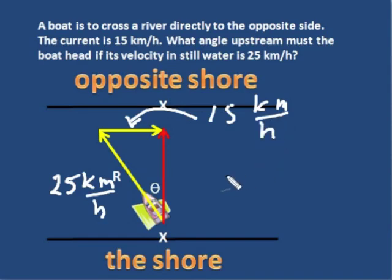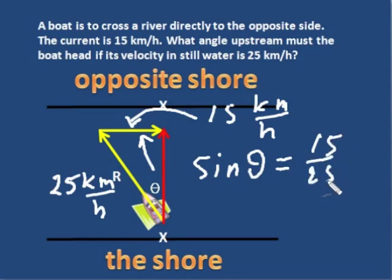And therefore it's now very easy to find the angle theta. Sine theta is opposite over hypotenuse. We have the opposite and we have the hypotenuse. So we write down 15 over 25.